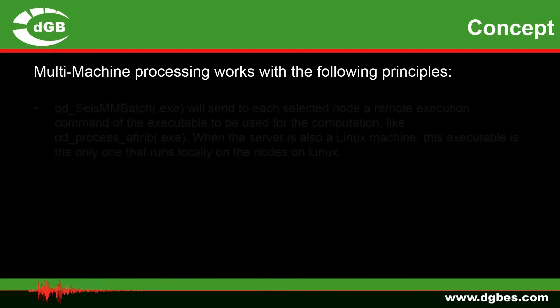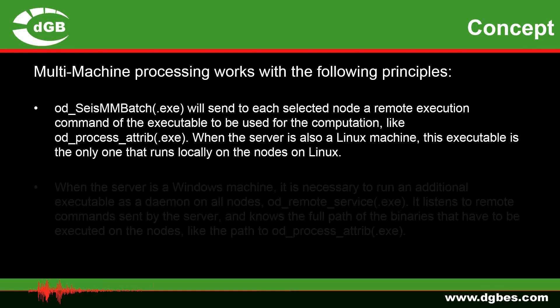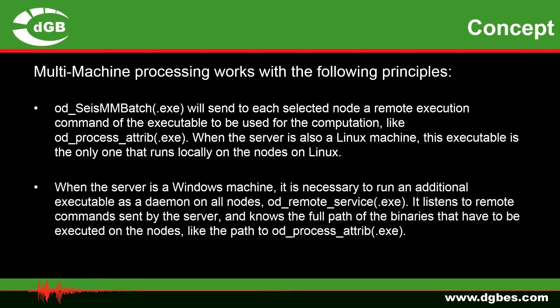We're working with the following principles in MM processing. OD seismic MM batch will send to each selected node a remote execution command of the executable to be used for the computation, like OD process atrib for example. When the server is also a Linux machine, this executable is the only one that runs locally on the nodes on Linux. When the server is a Windows machine however, it is necessary to run an additional executable as a daemon on all nodes — OD remote service. It listens to the remote command sent by the server and knows the full path of the binaries that have to be executed on the nodes, like the path to OD process atrib.